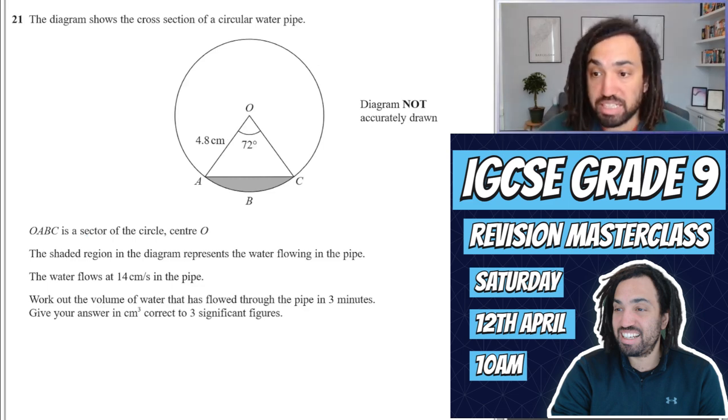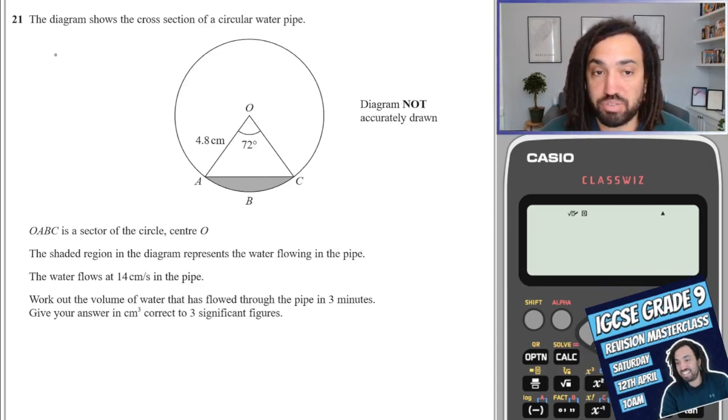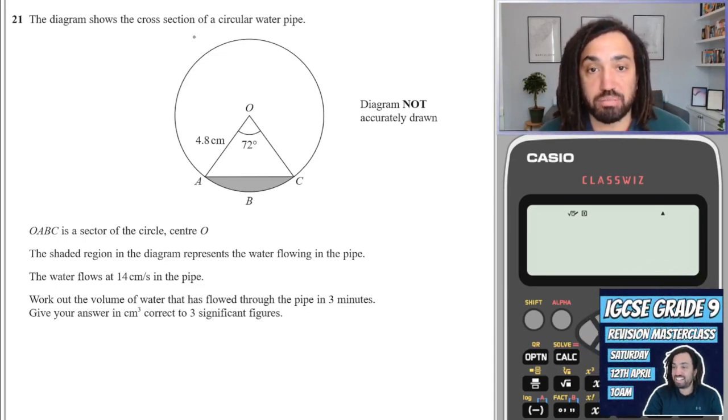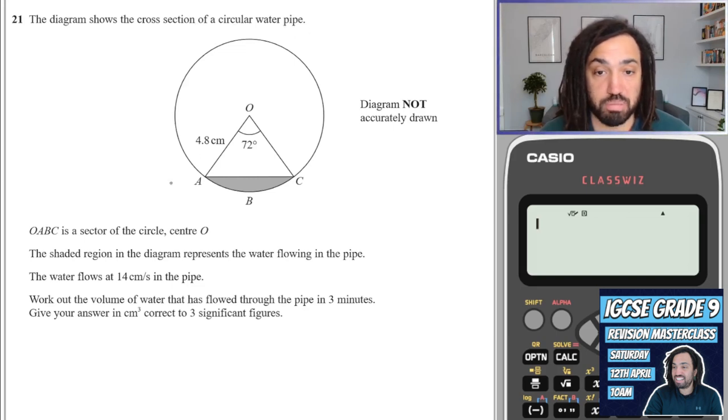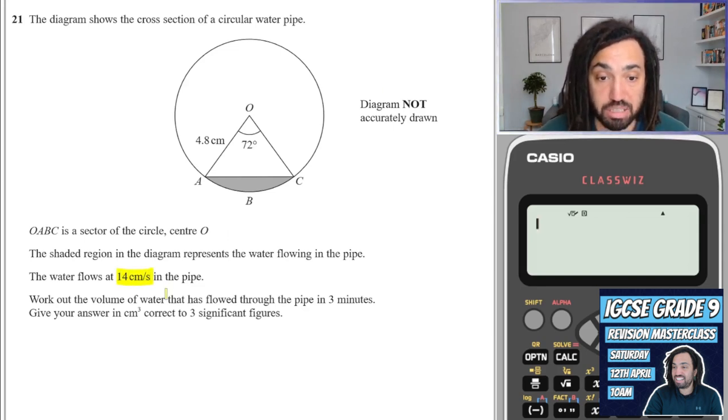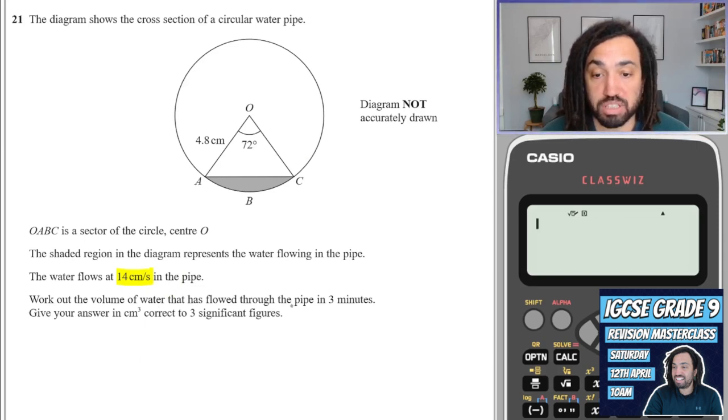Okay, let's get into this one. So I'm going to read the question first. It says the diagram shows the cross section of a circular water pipe. And it says that OABC is a sector of a circle. The shaded region in the diagram represents the water flowing through the pipe. The water flows through at 14 centimetres per second in the pipe. Work out the volume of water that's flowed through the pipe in three minutes, giving your answer in centimetres cubed.